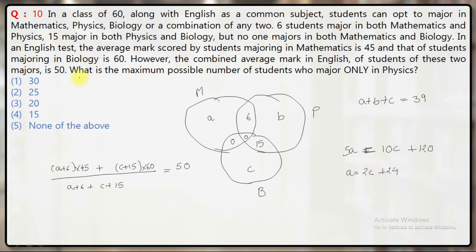You want the maximum possible number of students who major only in Physics—that means maximize b. But the sum is fixed. If you want to maximize b, you'll have to minimize both a and c. So I'm looking for the minimum value of a and c and the maximum value of b.